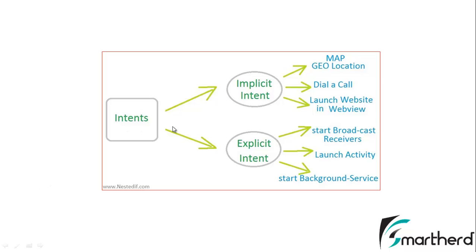Here is a brief description of the two branches of intents: implicit intents and explicit intents. Explicit intent is used to launch an activity or migrate from one activity to another, and it is also used to start broadcast receivers or to start any services. Implicit intents, as you can see, cover things like map geolocation, dial a call, and launch a website in web view.